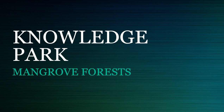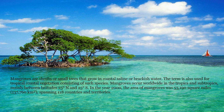Knowledge Park presents a description of mangrove forests. Mangroves are shrubs or small trees that grow in coastal saline or brackish water. The term is also used for tropical coastal vegetation consisting of such species. Mangroves occur worldwide in the tropics and subtropics, mainly between latitudes 25 degrees N and 25 degrees S.